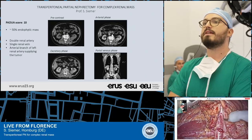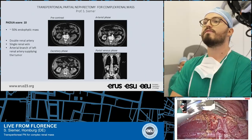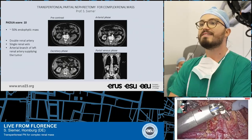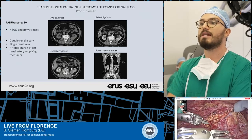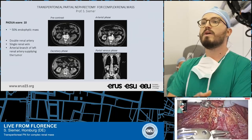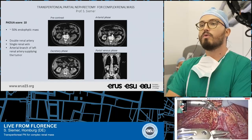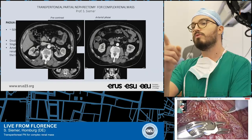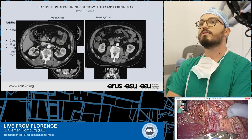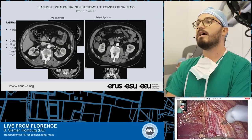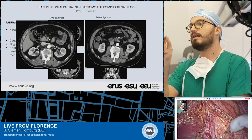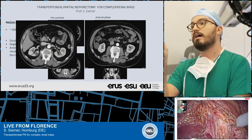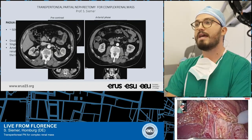It is a 50% endophytic mass with a Padua score of 10, in close contact with the collector system and the inferior posterior calyx. Looking closely at the vascular system, we can see two renal arteries and one renal vein. There appears to be a small branch supplying the tumor — it might be a venous branch.